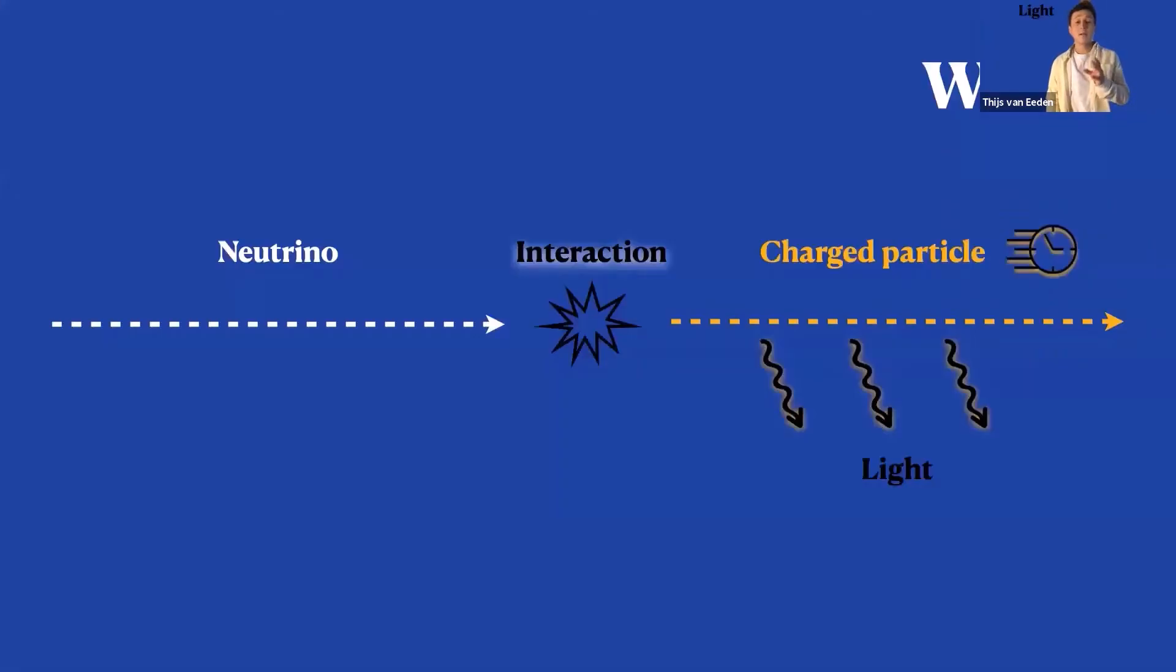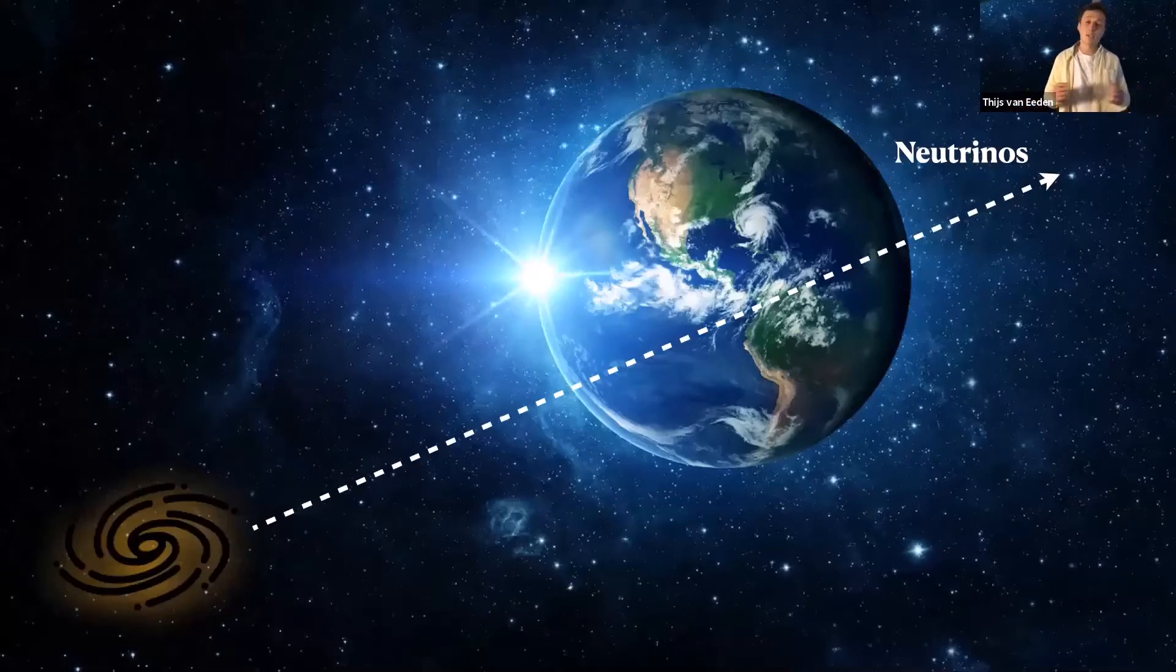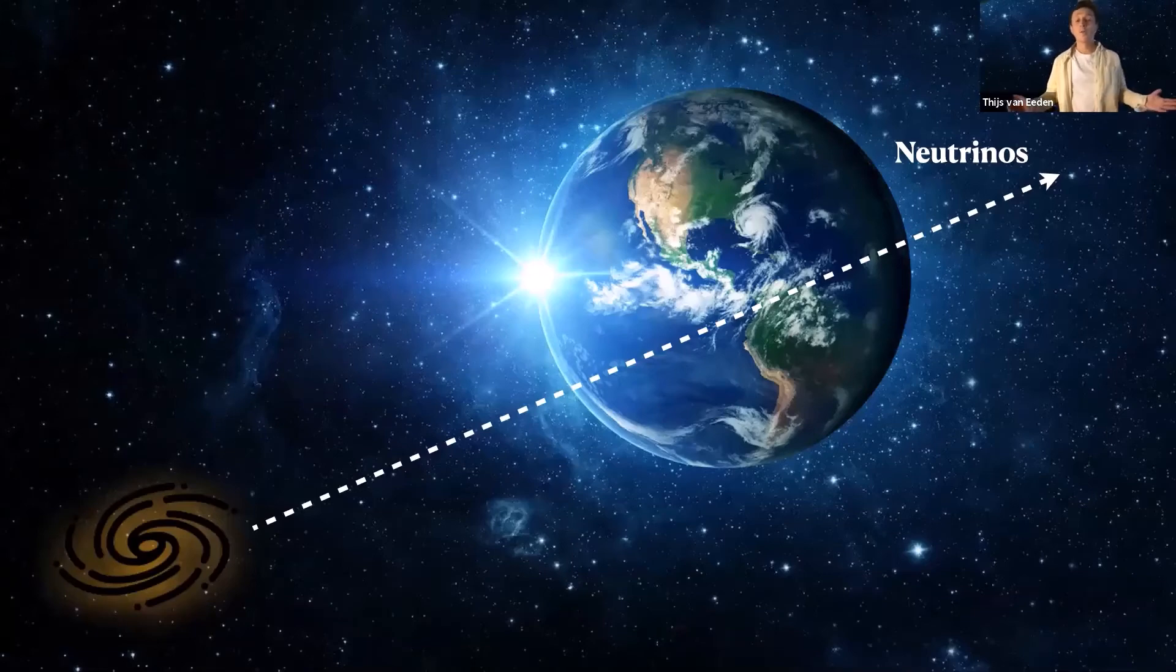We have something similar happening underwater, but then with light instead of sound. So we have these neutrinos flying through our universe. They pass our planet and every once in a while, they show us a faint light. What can we do with this?